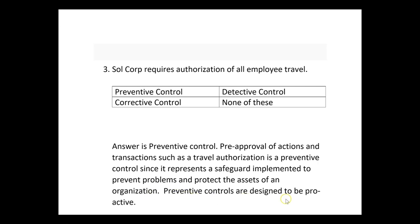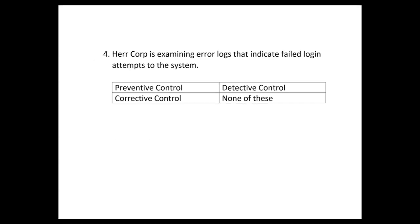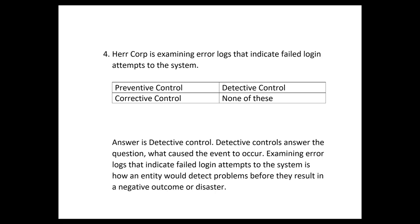Preventive controls are designed to be proactive, so on the exam any authorizations or pre-approvals look for that to be a preventive control. Number four: Her Corp is examining error logs that indicate failed login attempts to the system — is that preventive, detective, corrective, or none? That's a detective control. Examining error logs that indicate failed login attempts is how an entity detects problems before they result in a negative outcome. Remember: examining error logs and transaction logs is a detective control.